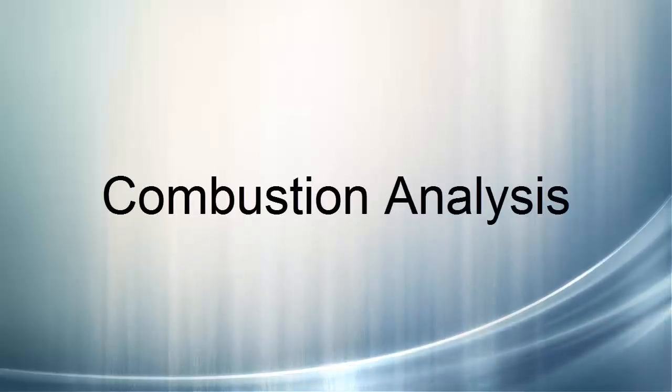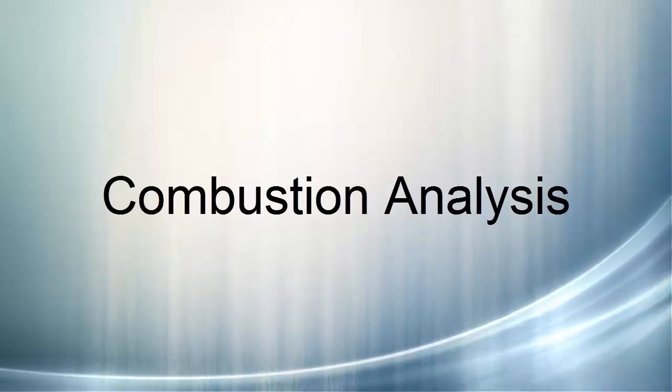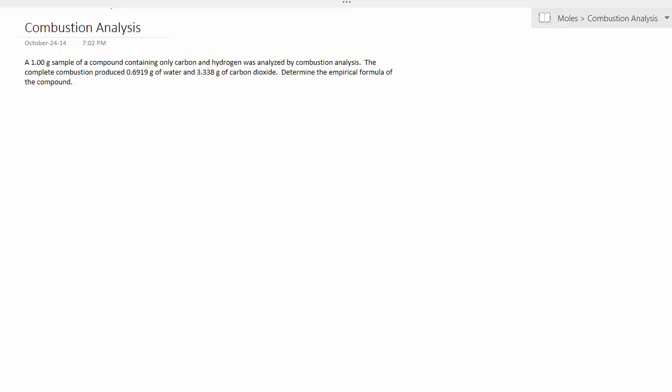Okay, we're going to have a look at what's called combustion analysis. This is sort of like the hydrate lab in that we're going to use some actual lab data to determine the formula of a compound. So, a one gram sample of a compound containing only carbon and hydrogen was analyzed by combustion analysis. The complete combustion produced 0.6919 grams of water and 3.338 grams of carbon dioxide to determine the empirical formula. This is complete combustion, and our unknown compound we're just going to call CXHY.